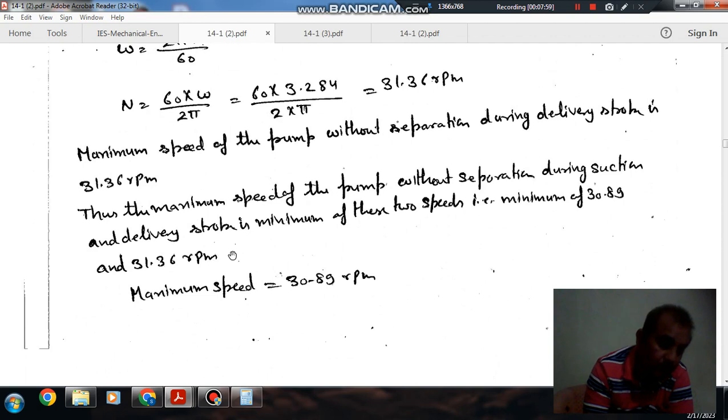In radians per second, it is 3.28. So the maximum speed is 30.89 RPM, which is the limiting speed. Thank you.